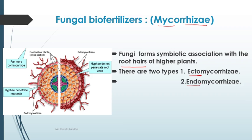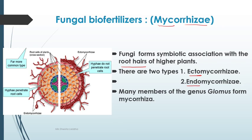We will be studying two types: ecto and endomycorrhizae. Many members of the genus Glomus form mycorrhizae. In the picture on the left-hand side, you can see endomycorrhizae — the fungal hyphae are penetrating into the root cortical cells. In contrast, ectomycorrhizae form a mantle on the outside and do not penetrate into the cortical cells.